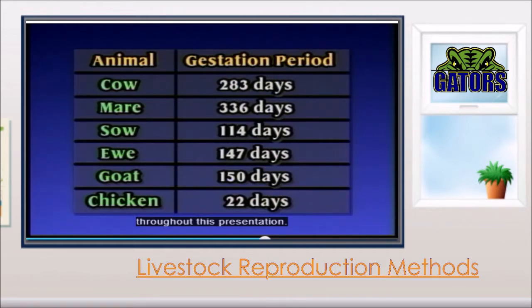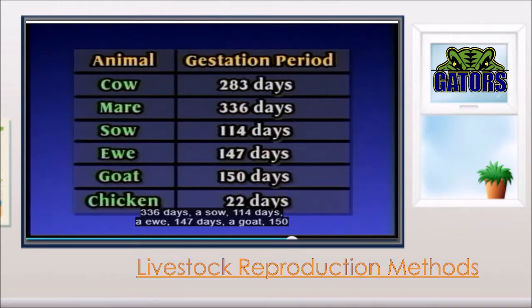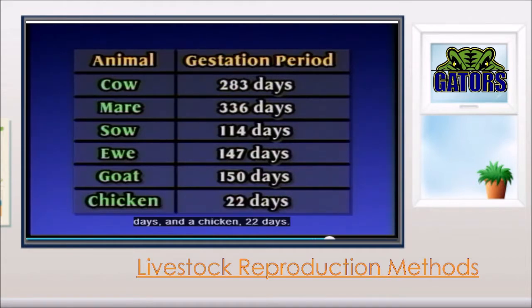The following chart shows the gestation period for a few of the animals discussed throughout this presentation. A cow has a gestation period of approximately 283 days, a mare 336 days, a sow 114 days, a ewe 147 days, a goat 150 days, and a chicken 22 days.